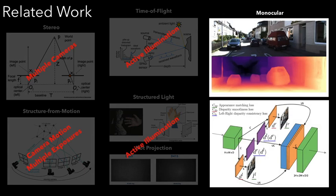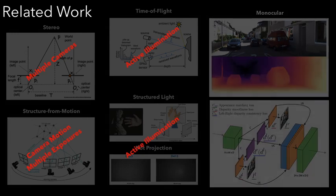Monocular depth estimation overcomes these challenges by requiring only a single RGB image to recover dense metric depth. However, monocular depth estimation is an ill-posed problem with inherent scale ambiguity.